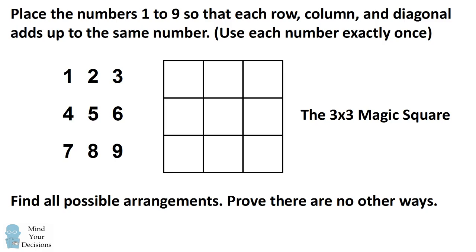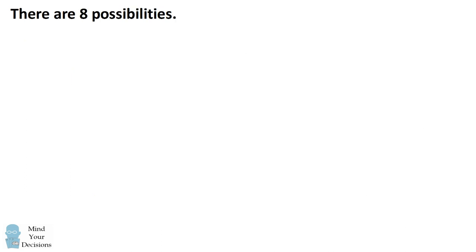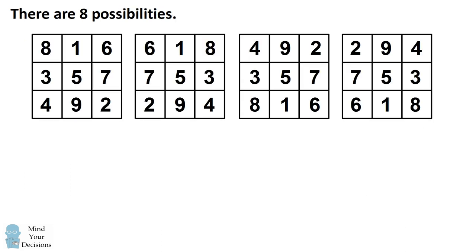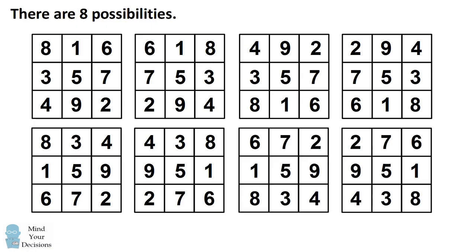Give this puzzle a try, and when you're ready, keep watching the video for the solution. Alright, there are 8 different possibilities for the 3x3 magic square. You'll notice some patterns. Every single square has the number 5 in the center.